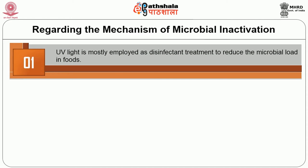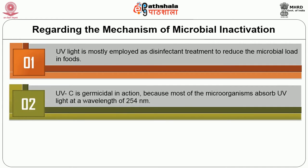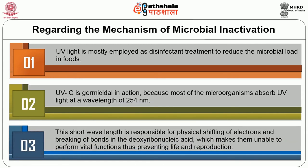UV light is mostly employed as a disinfectant treatment to reduce the microbial load in foods. UVC is germicidal in action because most microorganisms absorb UV light at a wavelength of 254 nanometers. This short wavelength is responsible for physical shifting of electrons and breaking of bonds in the deoxyribonucleic acid (DNA), making them unable to perform vital functions, thus preventing life and reproduction.